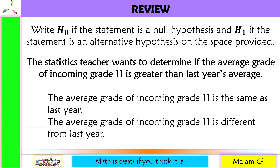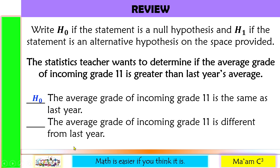Let's have a quick review of our previous lesson. Write H sub 0 if the statement is a null hypothesis, and H sub 1 if the statement is an alternative hypothesis. The statistics teacher wants to determine if the average grade of incoming grade 11 is greater than last year's average. Statement 1: the average grade of incoming grade 11 is the same as last year — this will be H sub 0. And the average grade of incoming grade 11 is different from last year — this will be H sub 1.